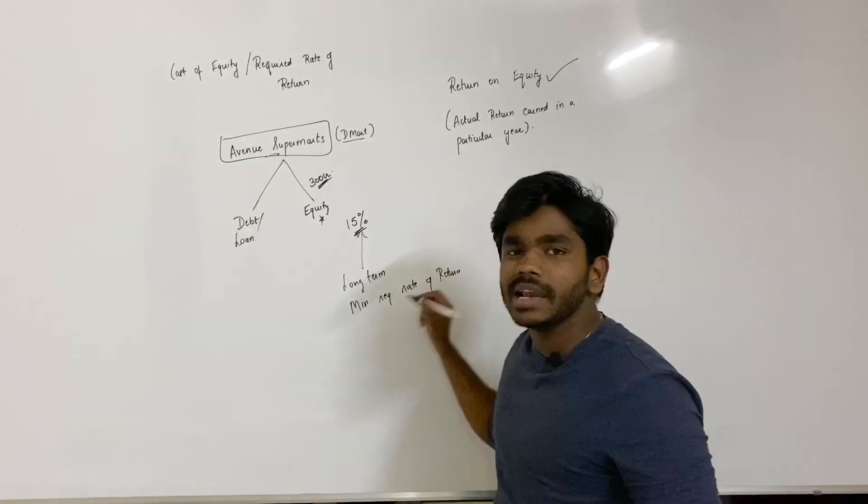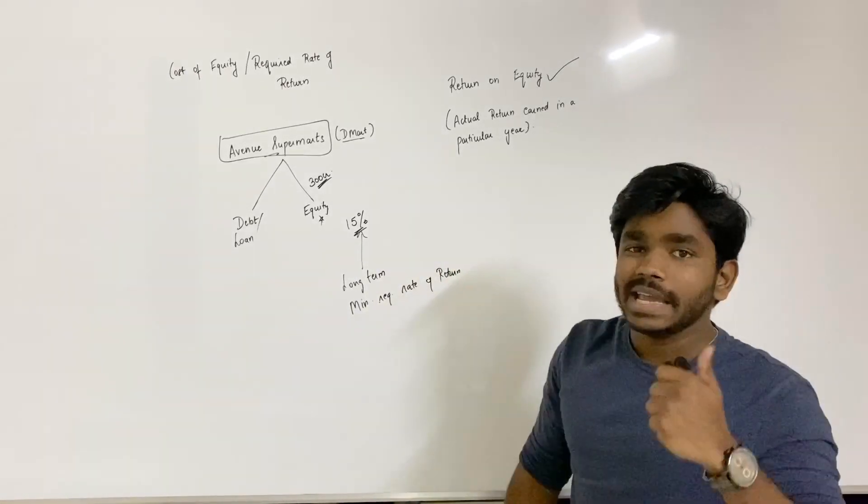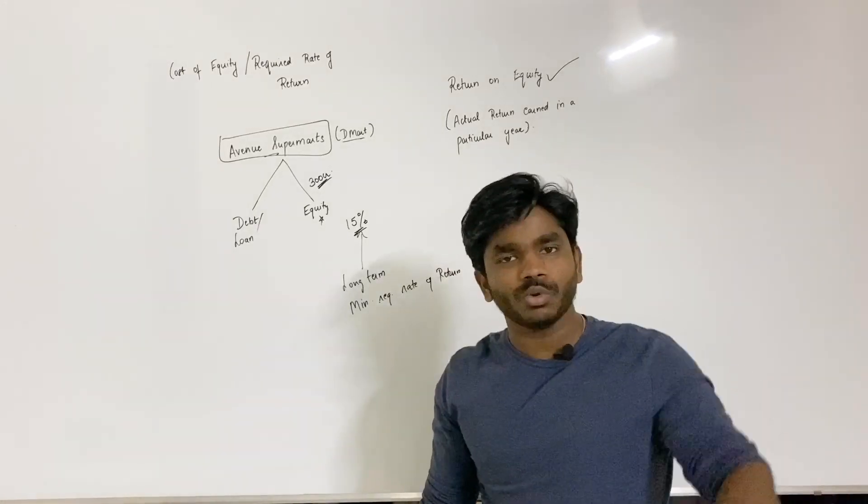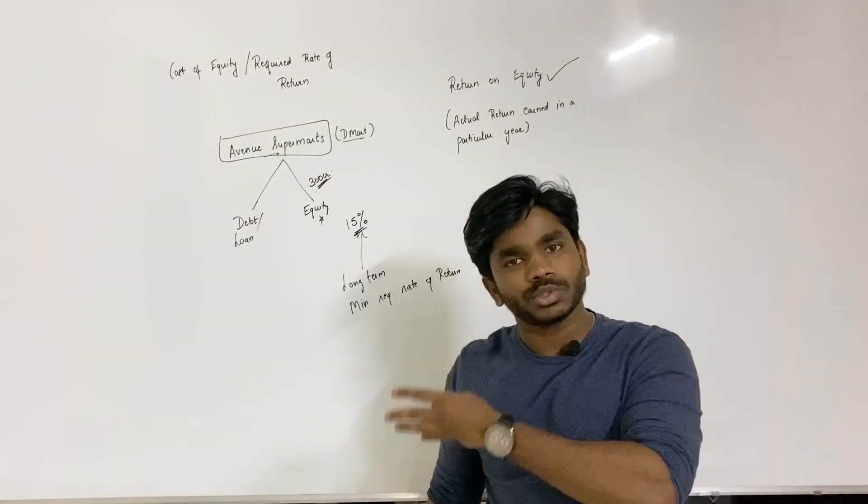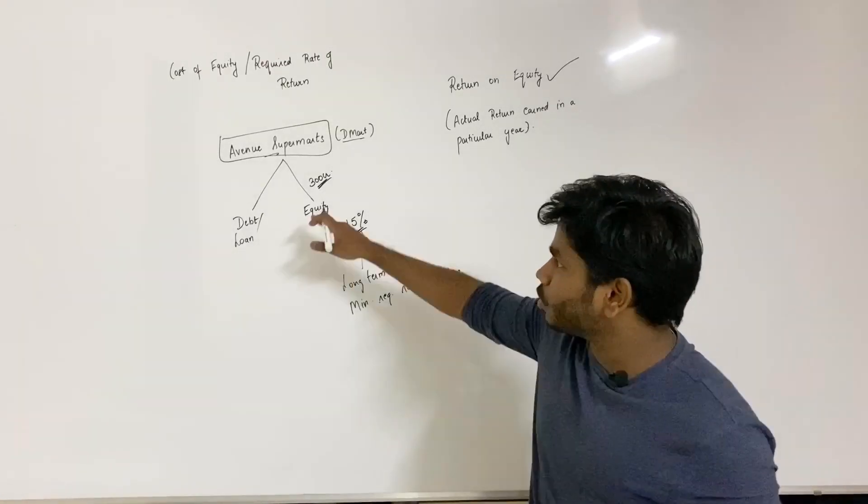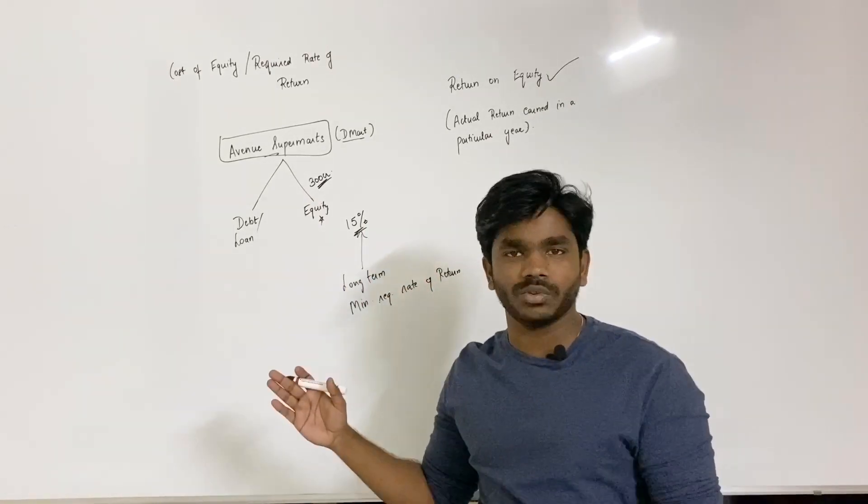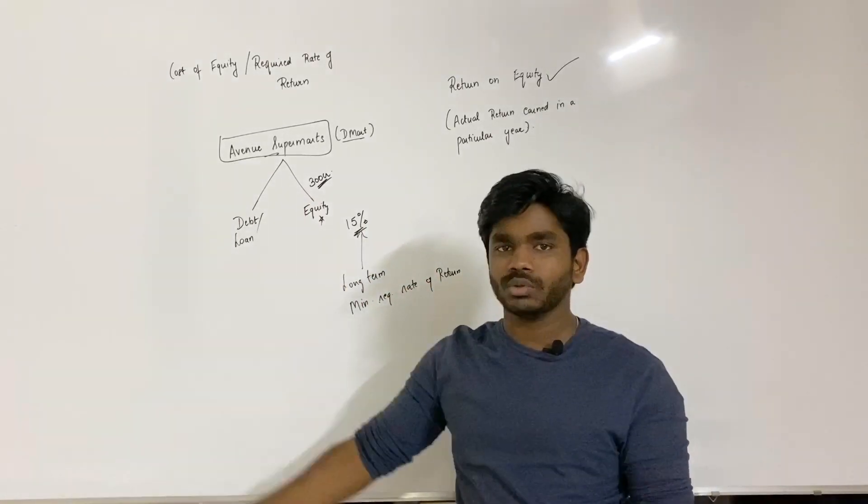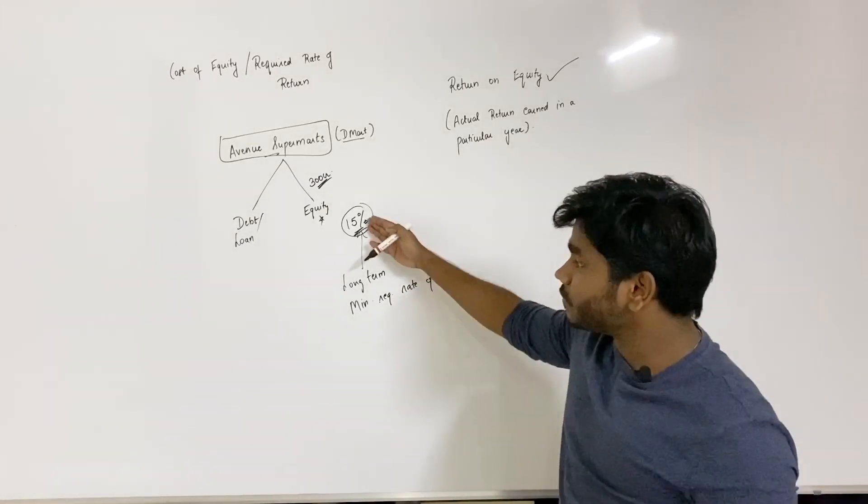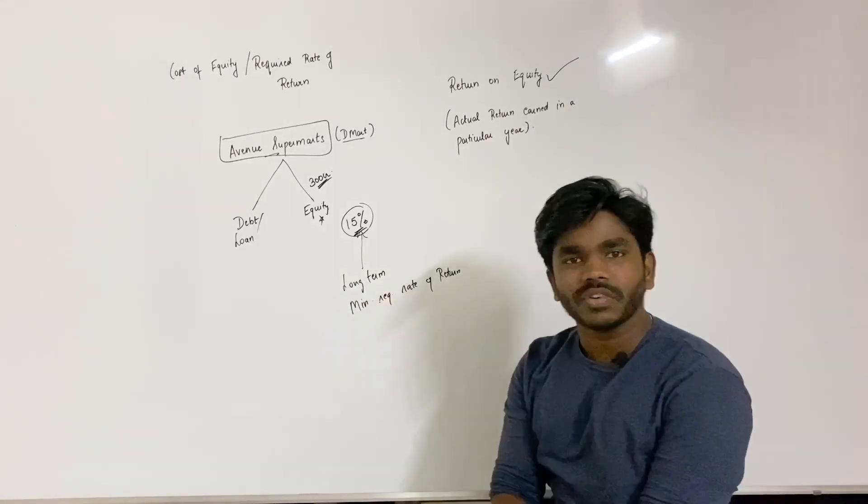In reality, it's not necessary it will be 15%. It will be more or less than 15%. For an investor, the source of returns is two: either the company will give dividends, or the stock price increases. For example, the stock price increases from a share of 2000 to 2500 rupees. So, it's about two sources of returns. What is 15% from equity investors' perspective? Long term minimum required rate of return.